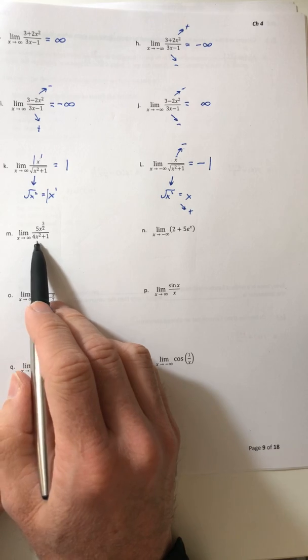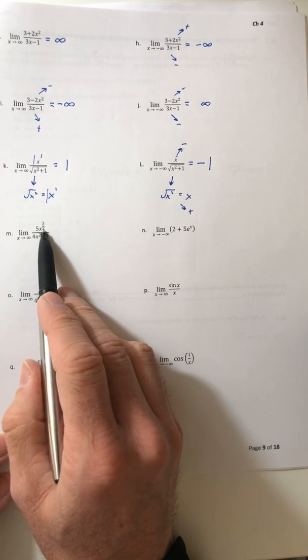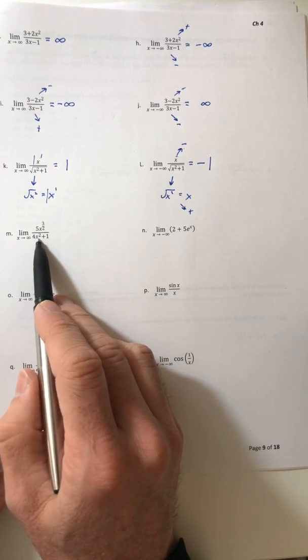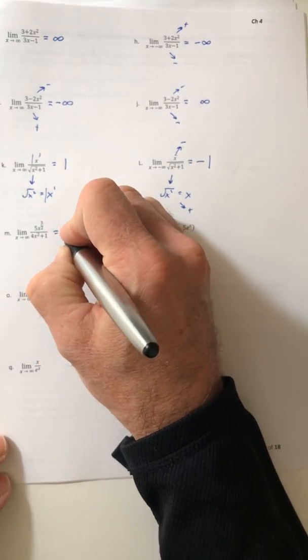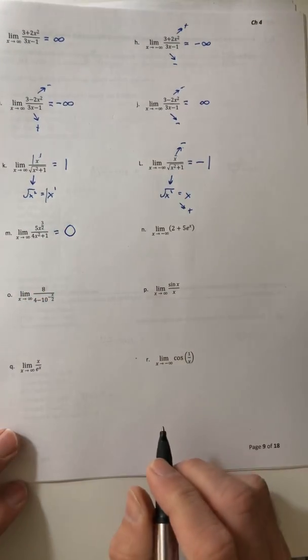All right, part m, now it's just going back to the degrees again. So the degree of this is 3 over 2, the degree of the denominator is 2. So that is a big ol' zero.